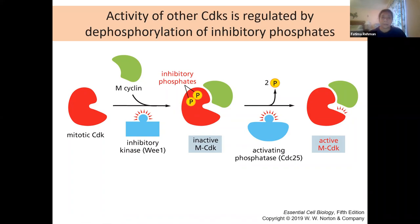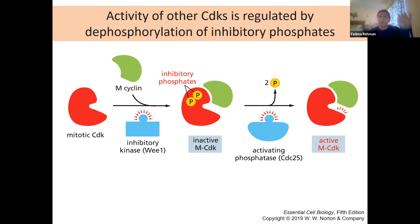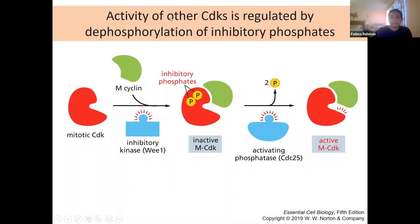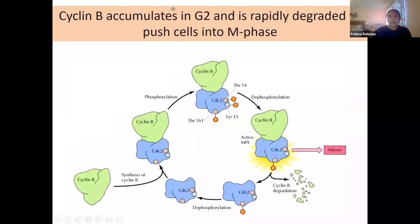If environmental cues stall the cell and it cannot proceed, you'll see accumulation of cyclin B or extra phosphorylations of CDC2, indicating the cell is stalled and won't go through mitosis until that block is released. You can stall a cell even when all cyclins and CDKs are present by controlling these post-translational modifications through selective phosphorylations and dephosphorylations.